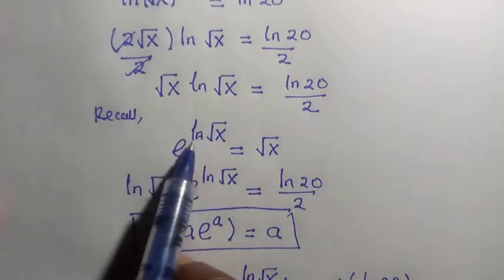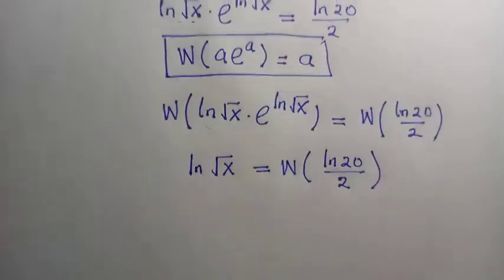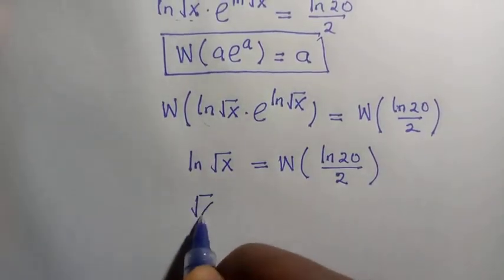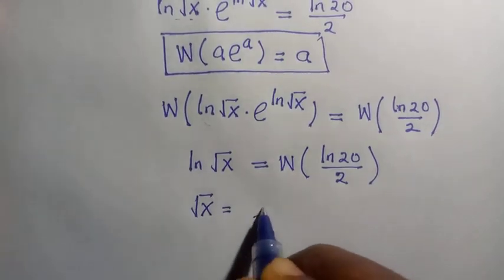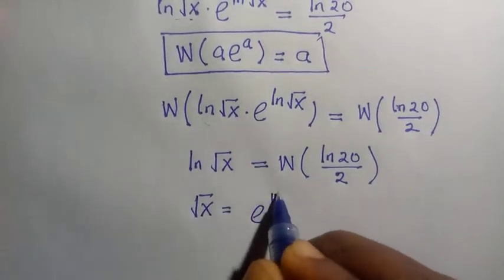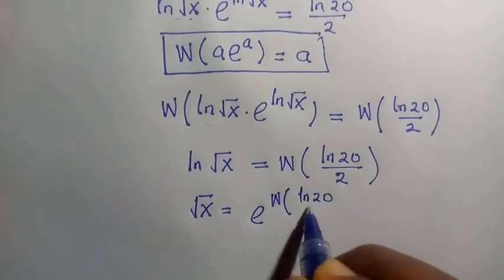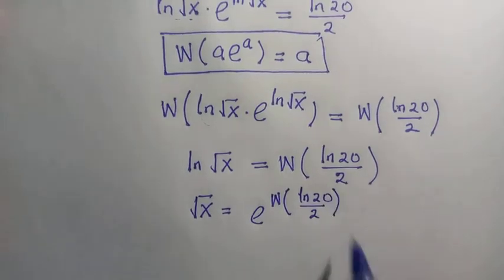So it's the negation of ln. So when we introduce that, we have this as root x equals exponential omega of ln 20 divided by 2.